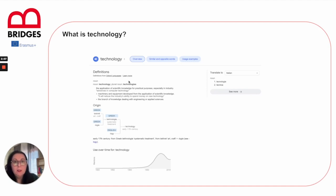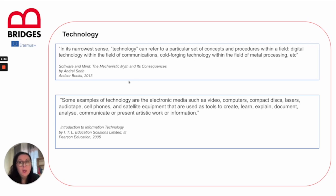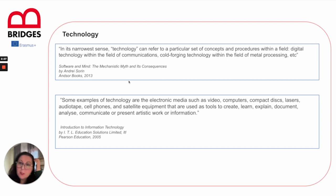So technology can be something that has to do with conceptual innovations, or it can be tangible or intangible. It comes from the Greek word 'techne', meaning art or craft. In the narrow sense, technology can refer to a particular set of concepts and procedures within a field — digital technology within the field of communication, or forging technology within the field of metal processing.